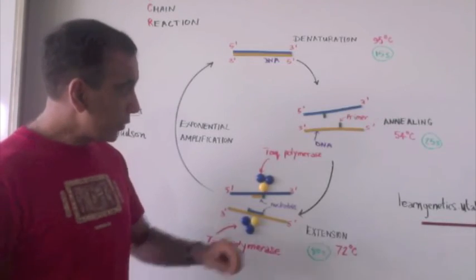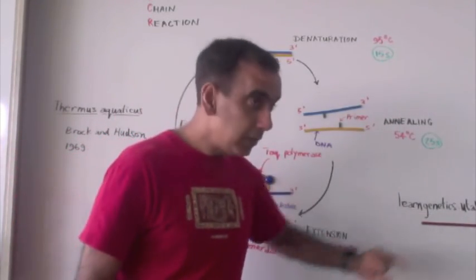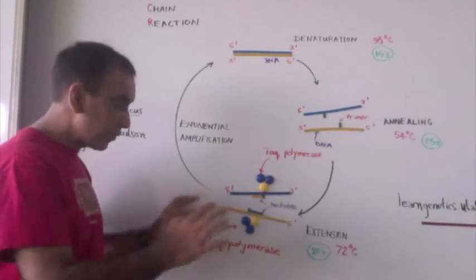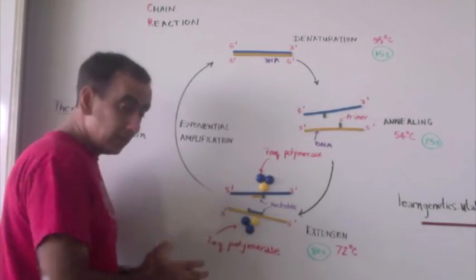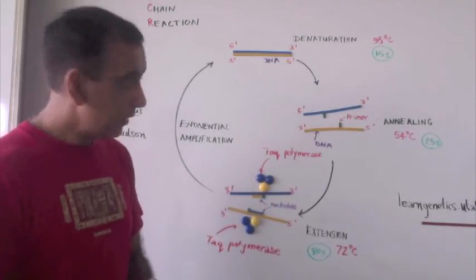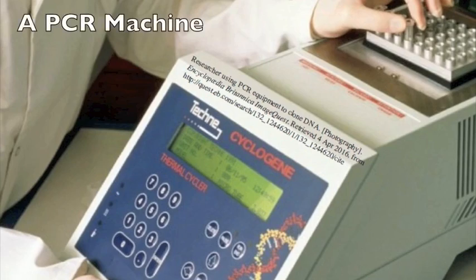And now if you go to learngenetics.utah.edu and you interact with the virtual lab, you will get a complete understanding of how the cycle of the polymerase chain reaction occurs.